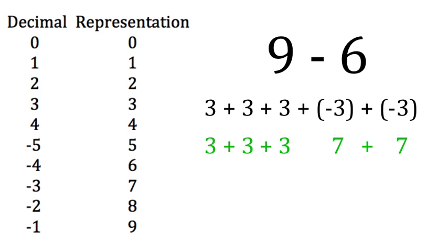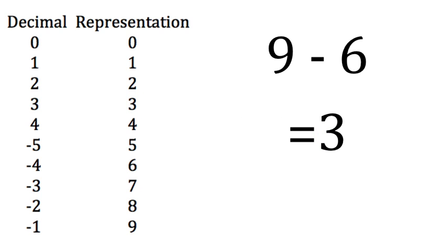So we look up 3 in the table, and we see that 3 plus 3 plus 3 is equal to 3 plus 3 plus 3. But then we look up minus 3 in the table, and we see that minus 3 plus minus 3 is equal to 7 plus 7. This, in total, is 9 plus 14, which is 23. Now we ignore the leading digit here, which in our case is 2, and so we're left with 3 in the representation. Then we go back from the representation to the decimal, and we can see that 3 in the representation is equal to 3 in the decimal. So the answer to 9 minus 6 is equal to 3.